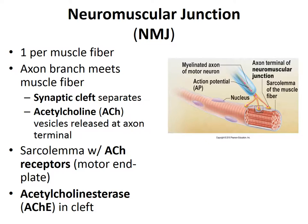When the electrical impulse or action potential reaches the synaptic terminals, calcium channels within the synaptic terminal begin to open, causing calcium to rush into the axon terminal. As a result of the influx of calcium, synaptic vesicles containing the neurotransmitter acetylcholine fuse with the axon membrane, releasing the neurotransmitter into the synaptic cleft by exocytosis.